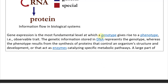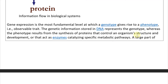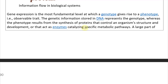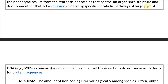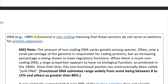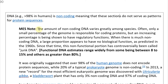Gene expression is the most fundamental level at which a genotype gives rise to a phenotype. The genotype is all the genes an organism has, and the phenotype is all the observable traits. The genetic information stored in DNA represents the genotype, whereas the phenotype results from the synthesis of proteins that control an organism's structure and development, or that act as enzymes catalyzing specific metabolic pathways.